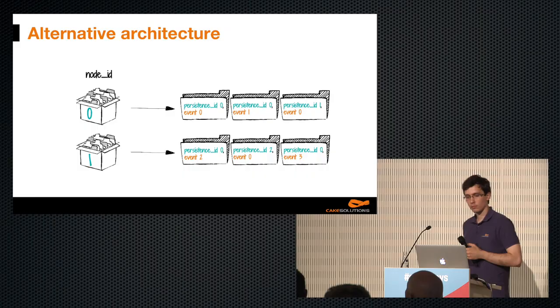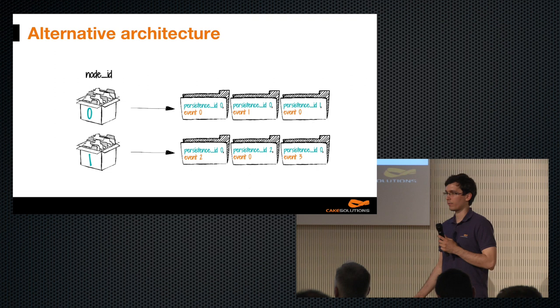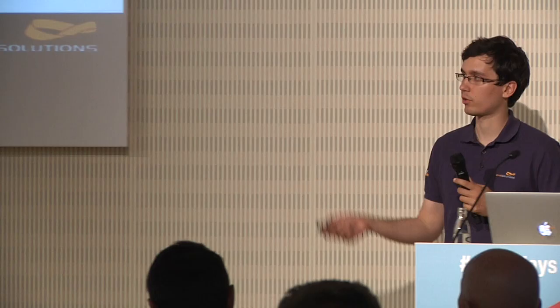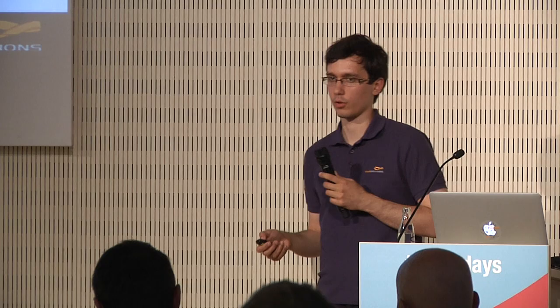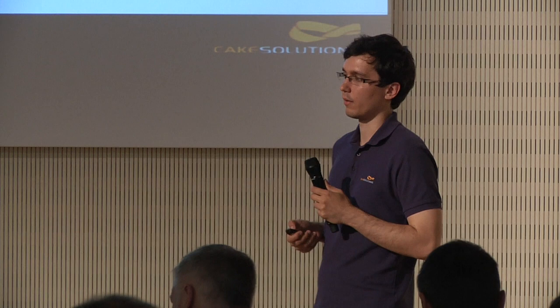During the implementation, we also talked about an alternative architecture. This alternative architecture was never implemented, but we're actually considering it for the implementation of Akka Persistence for Kafka. It's very nice because it's not dependent on Cassandra 3's implementation of materialized views, and it gives us all the guarantees that we need for Akka Persistence. I'll explain it because it nicely uses some of the concepts known in streaming and in distributed systems.